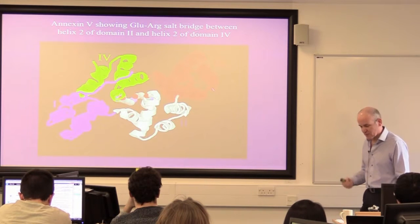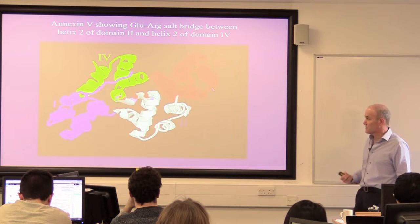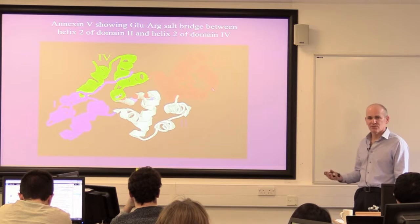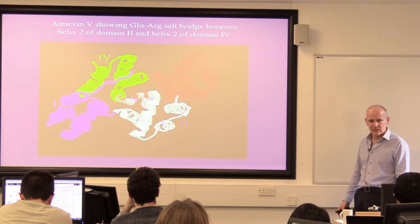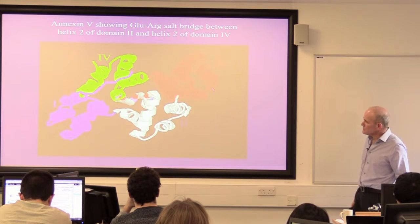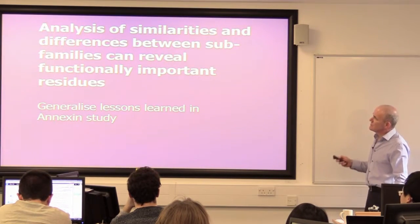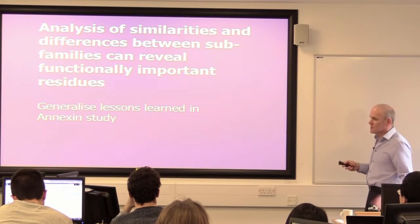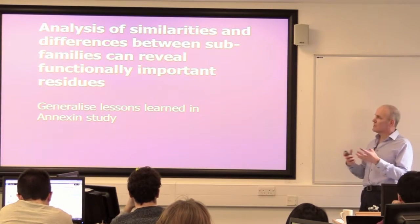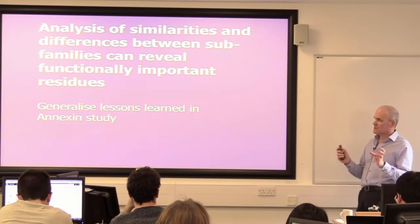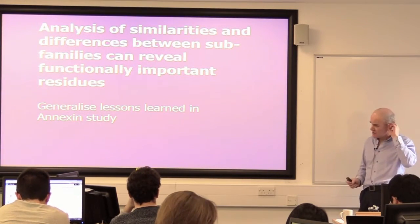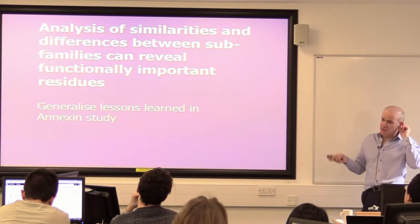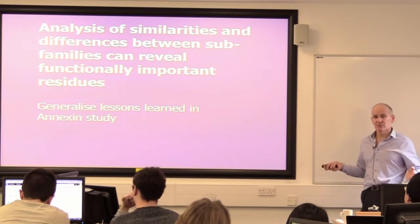The reason I show you this is we found all this just by looking at the sequences and thinking about what the sequence conservation patterns might mean in terms of 3D structure, and doing a bit of structure prediction. So this kind of approach can be very powerful at understanding functionally important sites. Looking at subgroup comparison can really highlight those functionally important residues.